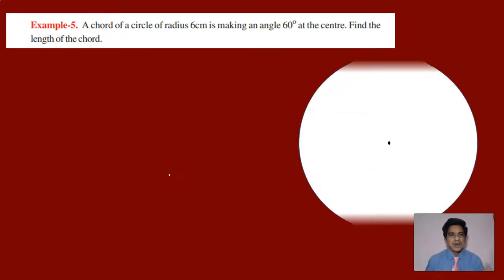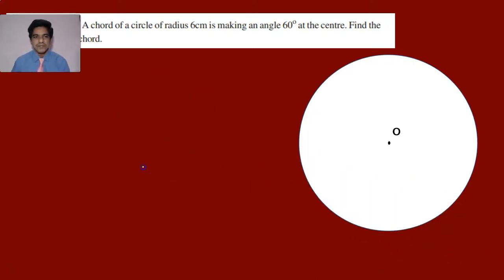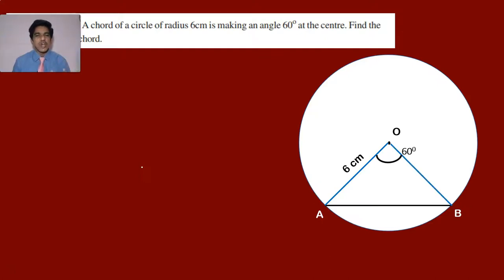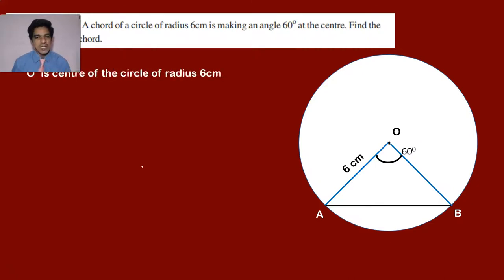Here we have a circle with a chord. The radius of the circle is 6 centimeters. I have taken the chord as AB, where A and B are points on the circle. When you join the endpoints of the chord to the center, that angle is 60 degrees — so angle AOB is 60 degrees. We are given the radius of the circle and the angle made by the chord at the center. We need to find the length of chord AB.